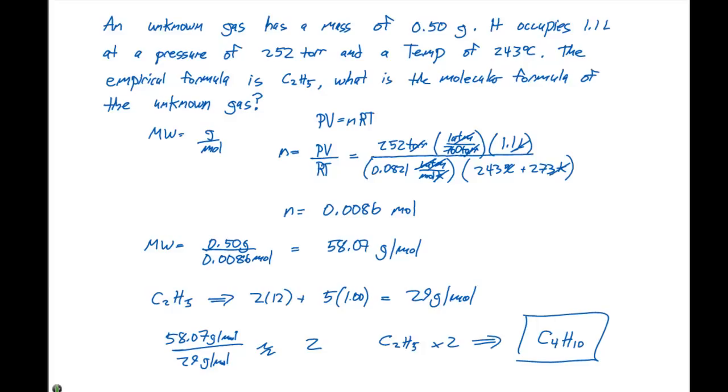In this case, when we try to determine our molecular formula, we need to figure out what molecular weight we have. We can do that by using the ideal gas equation, getting the number of moles, taking the grams that we're given, dividing by that number of moles to get the molecular weight of this unknown, which is 58.07 grams.